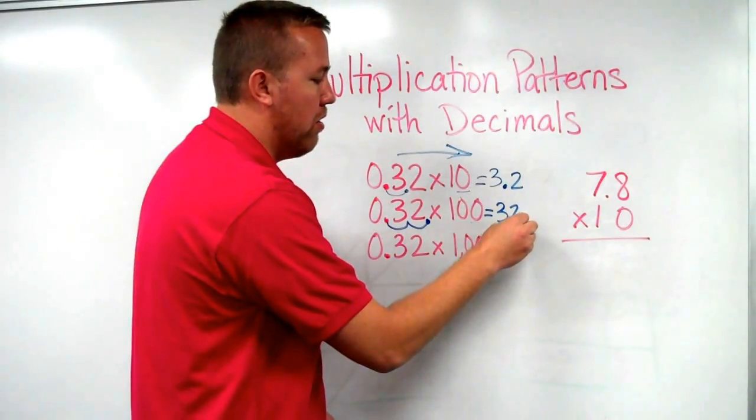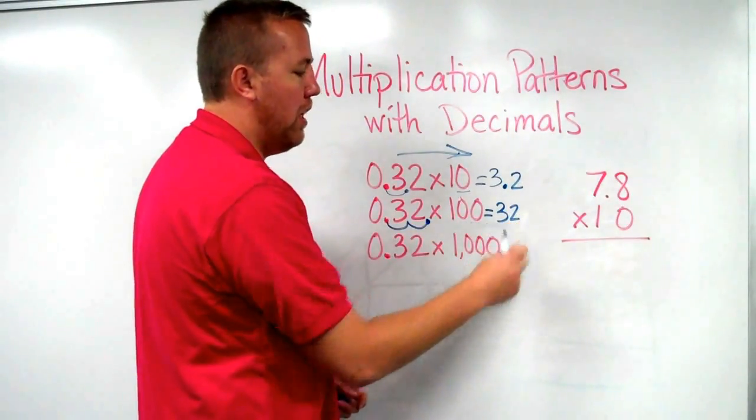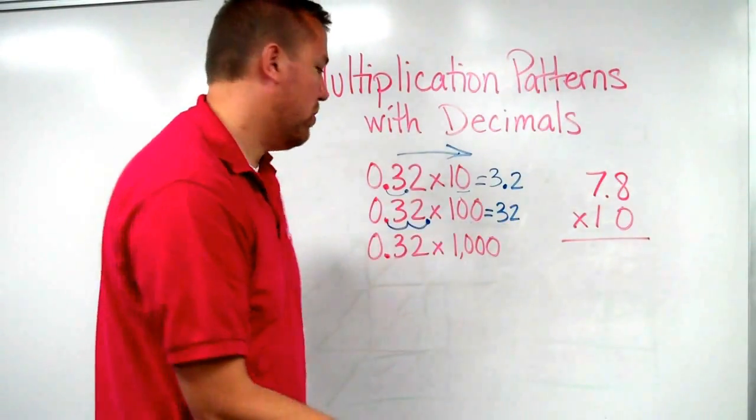That whole number doesn't need to show off its decimal. We already know it has that invisible decimal, so we can actually just erase it. But we have it right there, 32 with the decimal. 32 and nothing simply equals 32 holes.